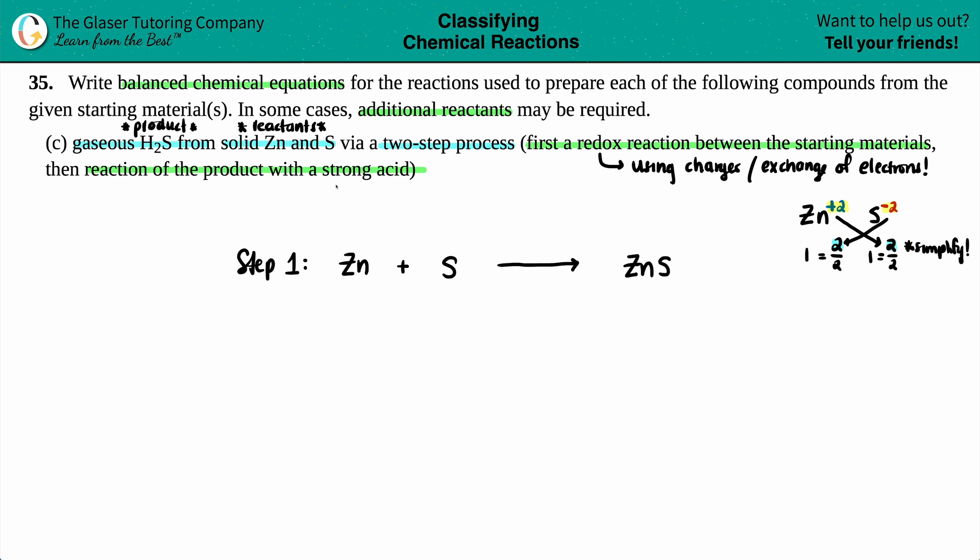That's how many zincs and sulfurs we need in step number one. So our compound would be ZnS. Now if we wanted to just add the states, they said that we had solid Zn and S. So this was a solid, this is a solid, and it seems like zinc sulfide is going to be a solid as well because it's ionic. I think my voice has come back. It has come back for step two. So let's go for it. Step number two.